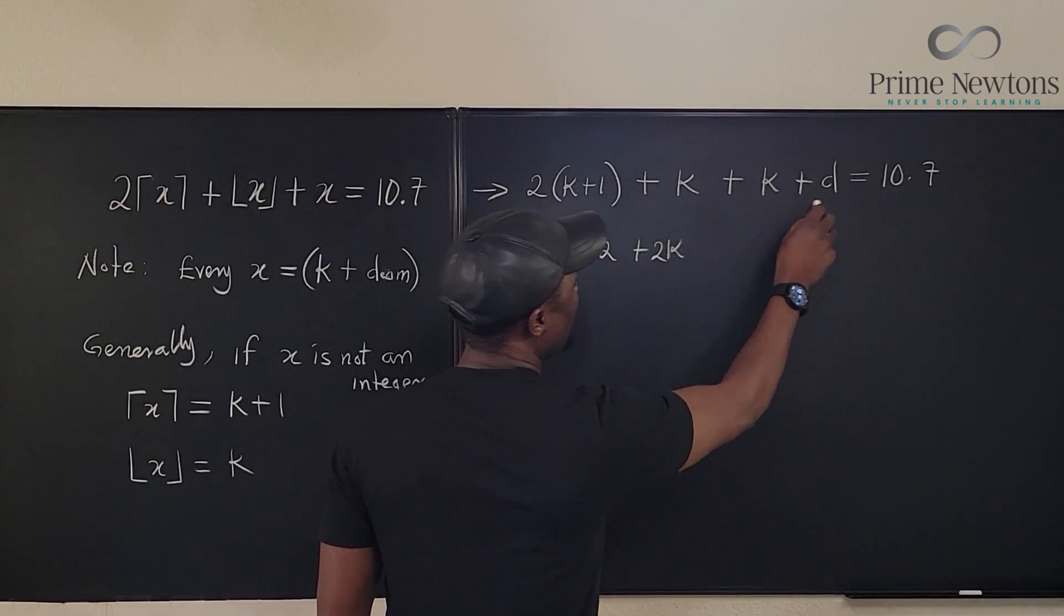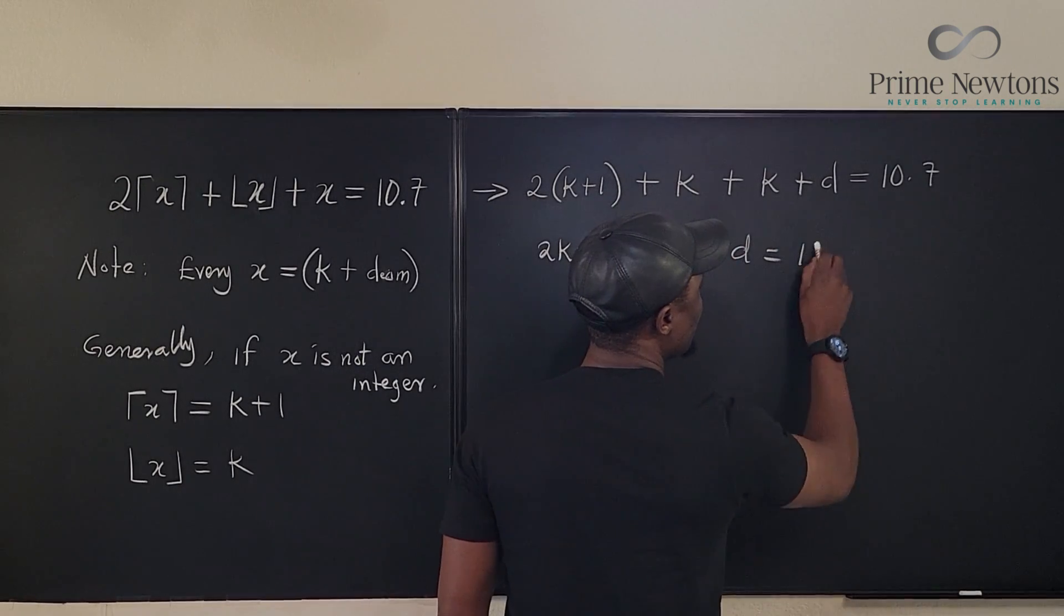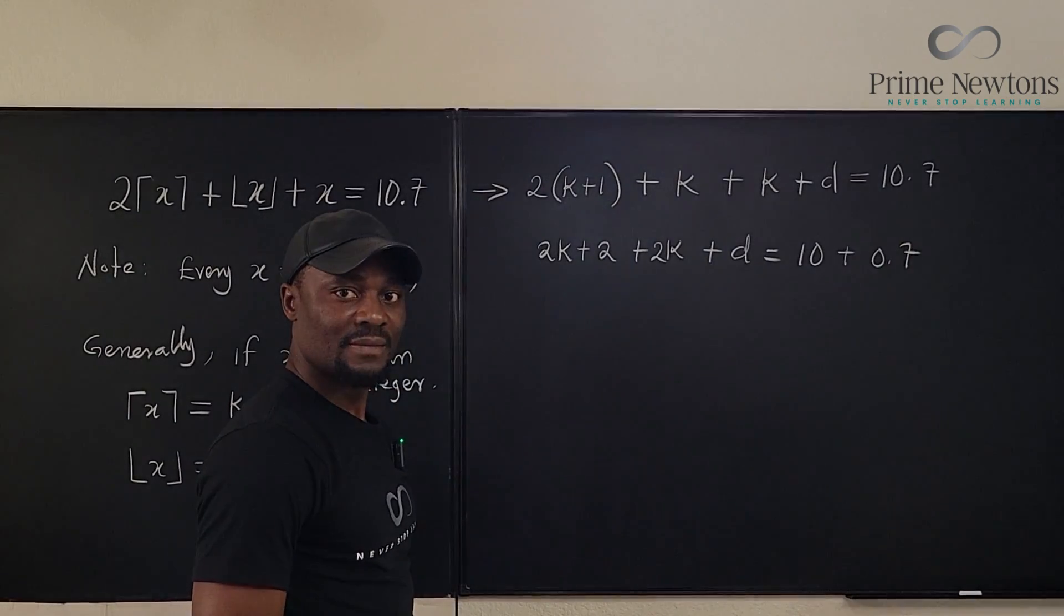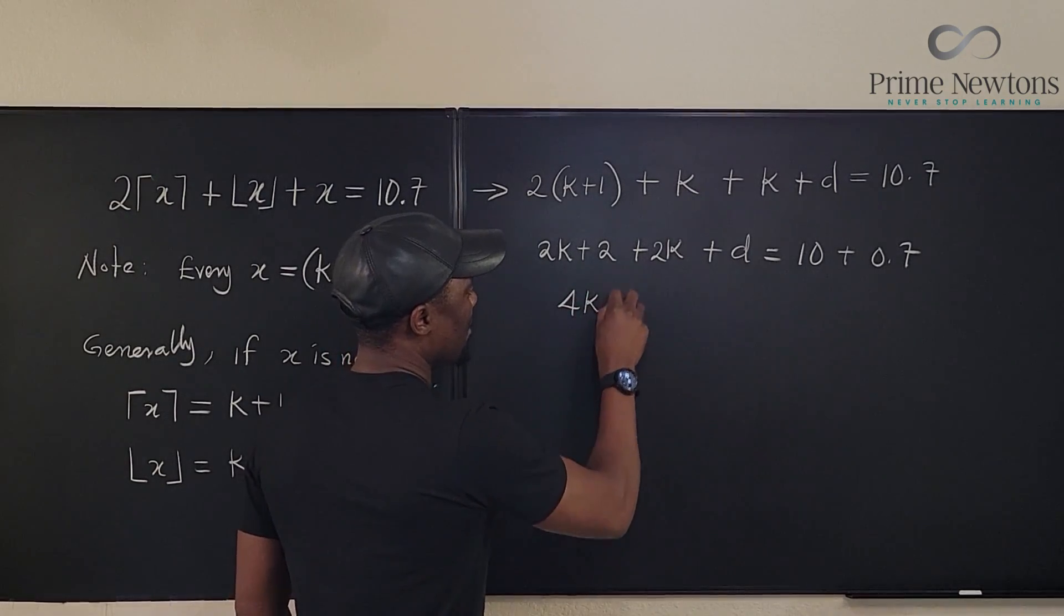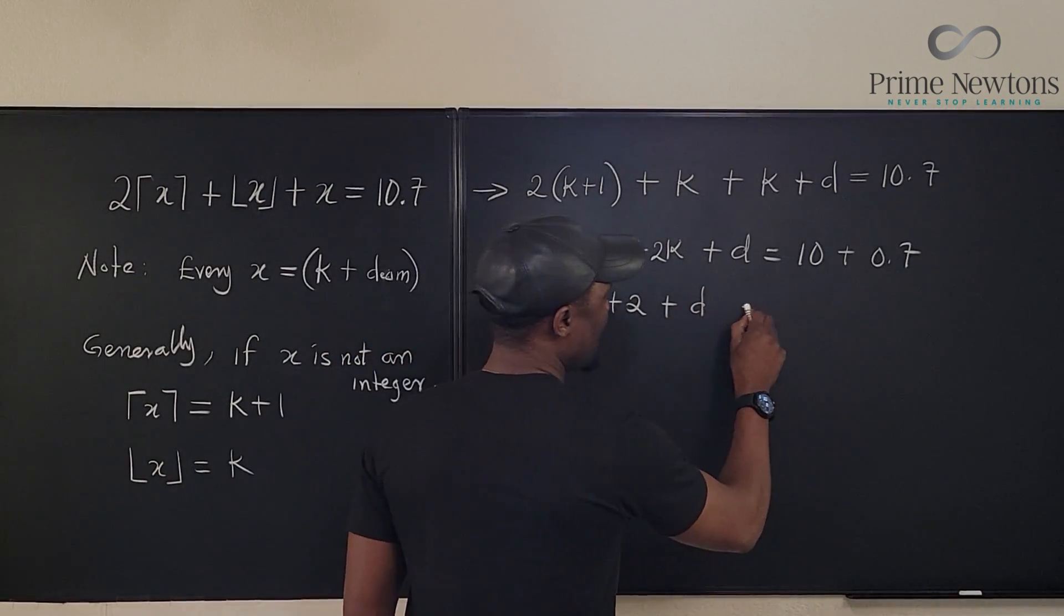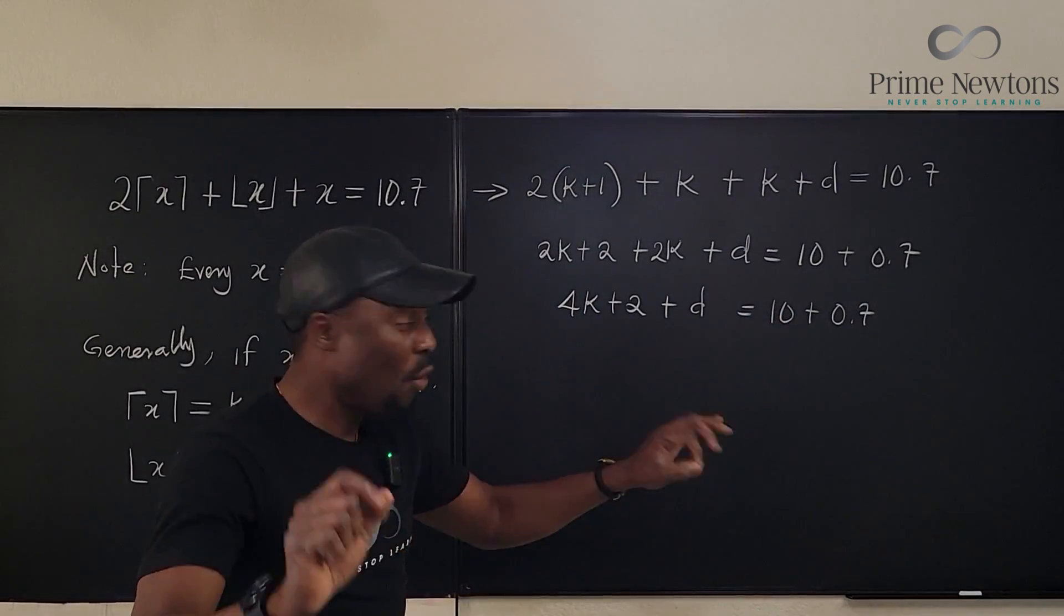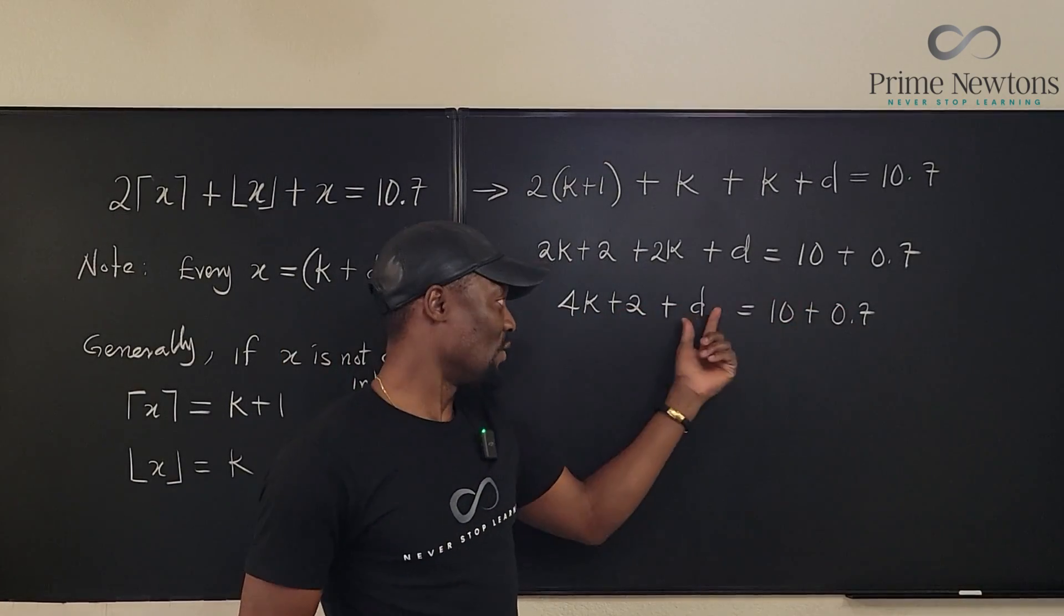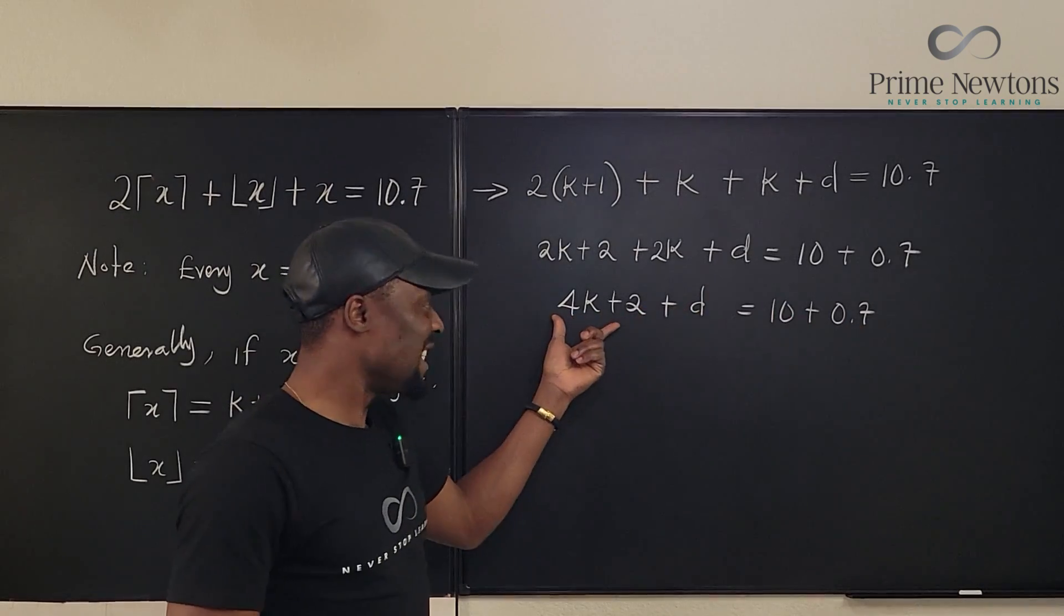If we simplify this, we have 2K plus 2 plus K plus K plus D equals 10 plus 0.7. Adding all of these together, we get 4K plus 2 plus D equals 10 plus 0.7. As you can see, there's only one decimal part on the left and one on the right. So this decimal part must equal this decimal part, and this integer part must equal this integer part, because the sum of integers is always an integer - it cannot suddenly generate a decimal.